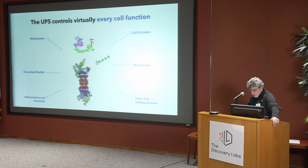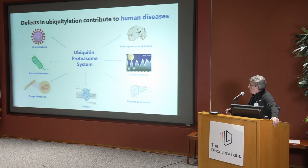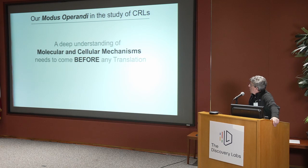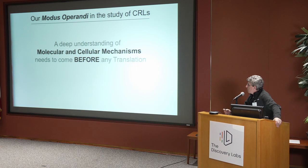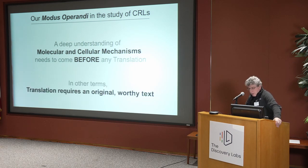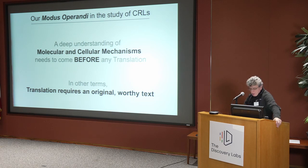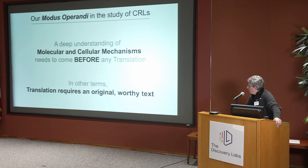As mentioned by Avram, the UPS controls virtually every cellular function, and its deregulation is involved in many human diseases. In our lab, we study mostly cancer. There is a lot of talking about translating basic science, but clearly a problem with translation is often due to bad basic science. To translate something requires a deep understanding of molecular cellular mechanisms that has to come before translation. This is the importance of understanding what enzymes — in our case, ubiquitin ligases — do in the cell before we can translate anything.